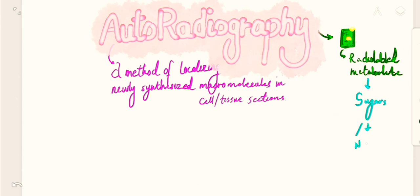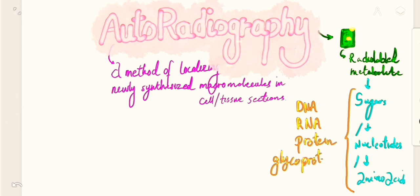These molecules must be metabolites, meaning they could be either sugars, nucleotides, or amino acids. These metabolites that have been radiolabeled could be added either to the DNA or attached to the DNA or the RNA or the protein or the glycoprotein or the polysaccharide chains inside the tissue or cell sections.